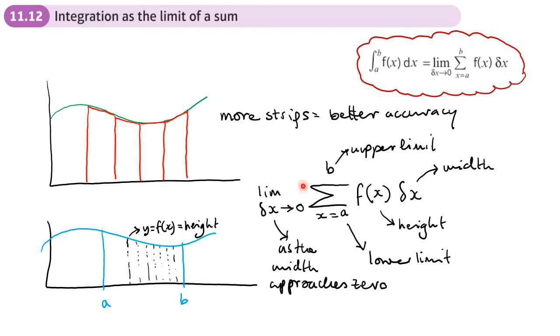So the whole thing together basically means that we have got these strips between values of A and B. So that's the height of each strip, and each strip has a width of delta X, a small value of X.